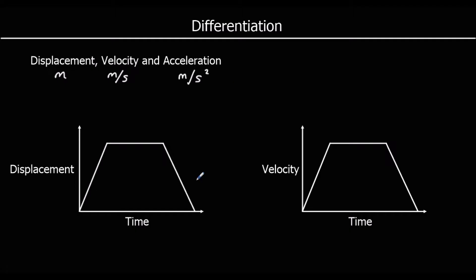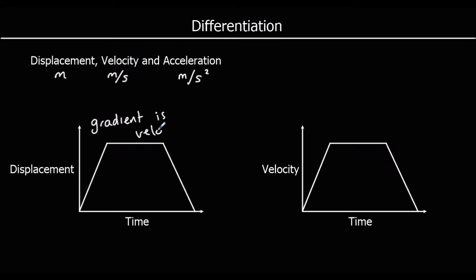On a displacement-time graph, the gradient is the velocity. If there's no gradient, there's no velocity — the particle is stationary. On a velocity-time graph, the gradient is the rate of change of the velocity, so the gradient on a velocity-time graph is the acceleration.